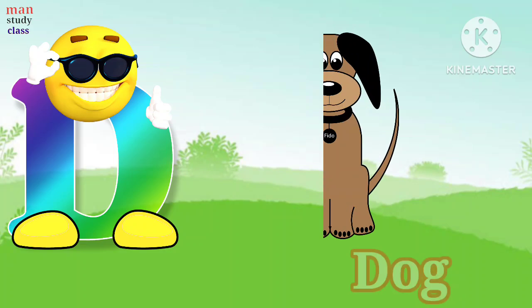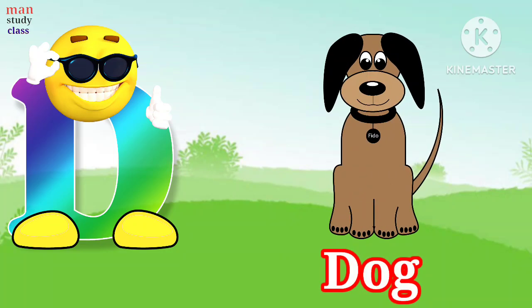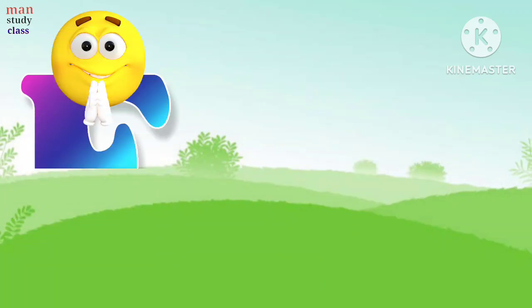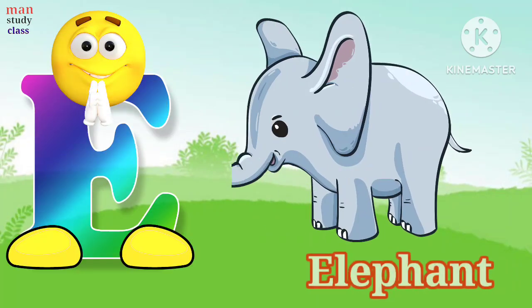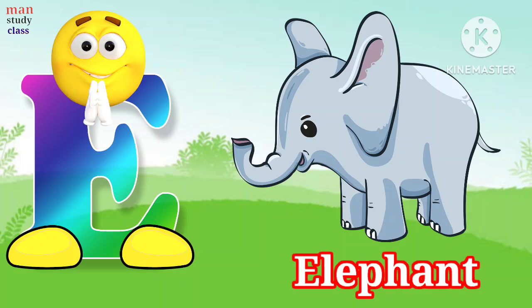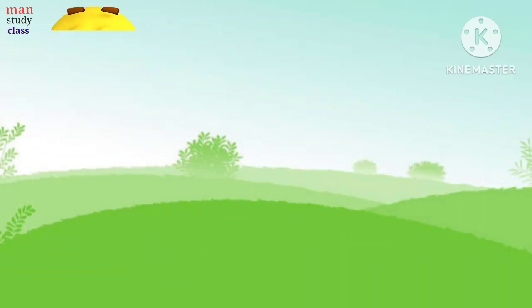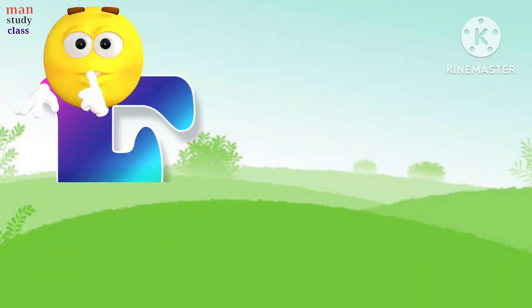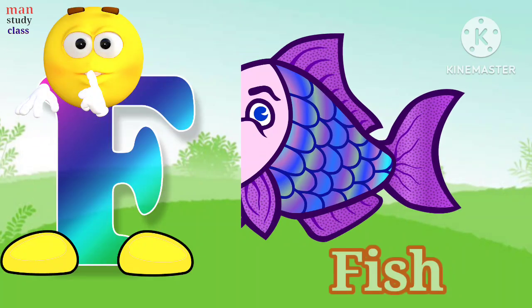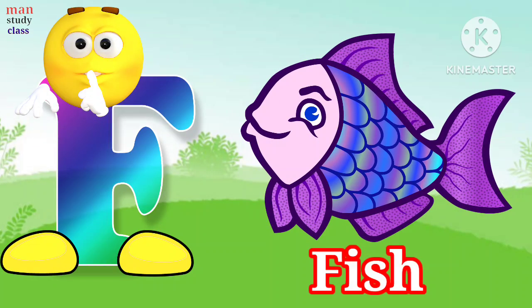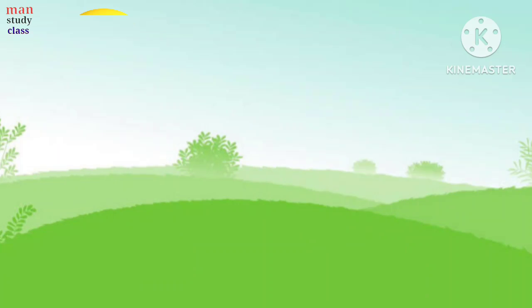D for dog, dog means kutta. E for elephant, elephant means hathi. F for fish, fish means machli.